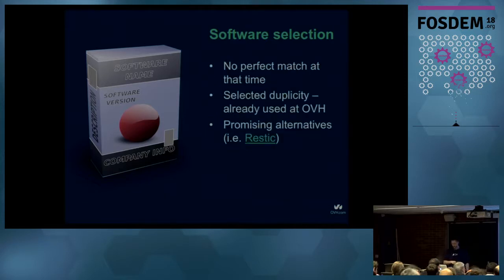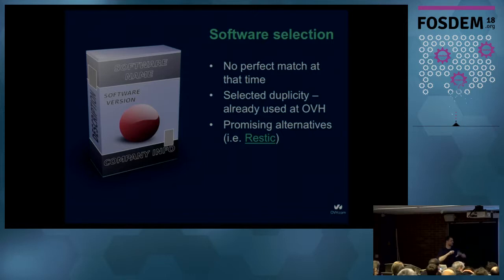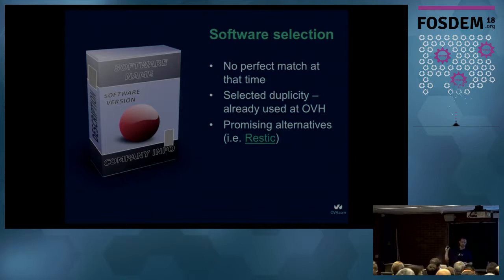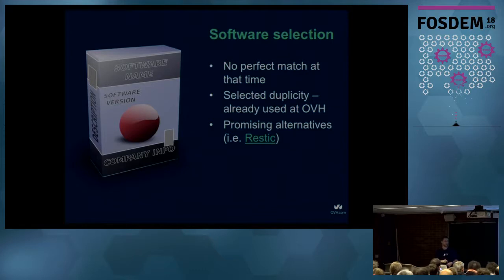We didn't find an ideal solution, so we looked at what experience existed at OVH. It turned out there's a team doing similar backups of VM images using Duplicity, which is open source backup software. We decided to use it since we already had knowledge of how it works. We also analyzed alternatives — there's a very promising project called restic; it's still young and lacks compression, but it may be our replacement in the future.